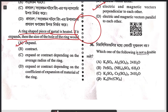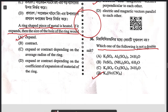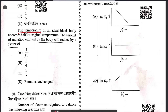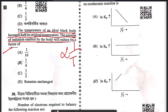Question 36: which of the following is not a double salt — that means it should be a coordination complex. The only possible answer is ferricyanide. Answer is D. Question 37: the temperature of an ideal black body becomes half its original temperature. The amount of radiation emitted will reduce by a factor of (1/2)⁴ — the only possible answer is A.